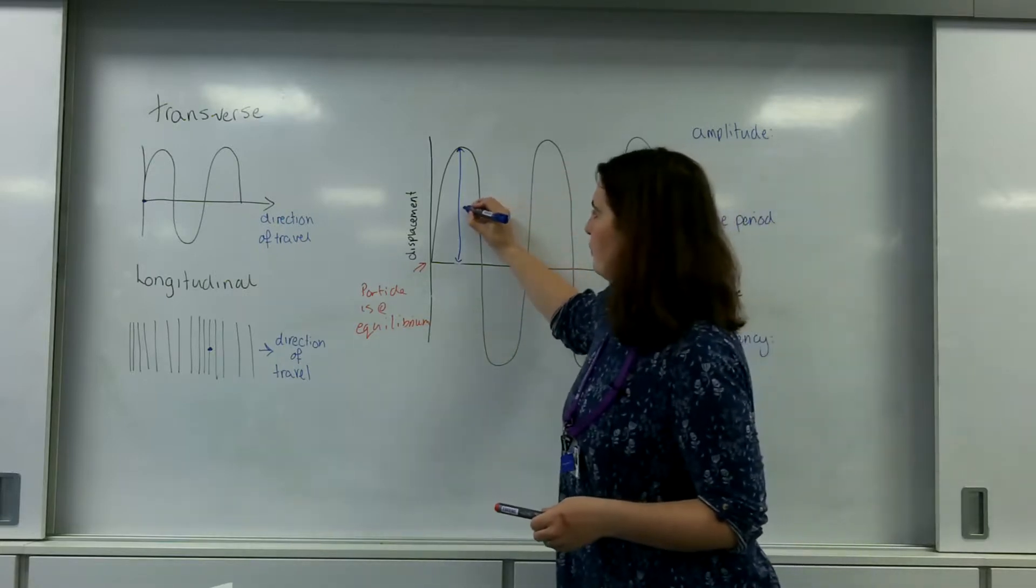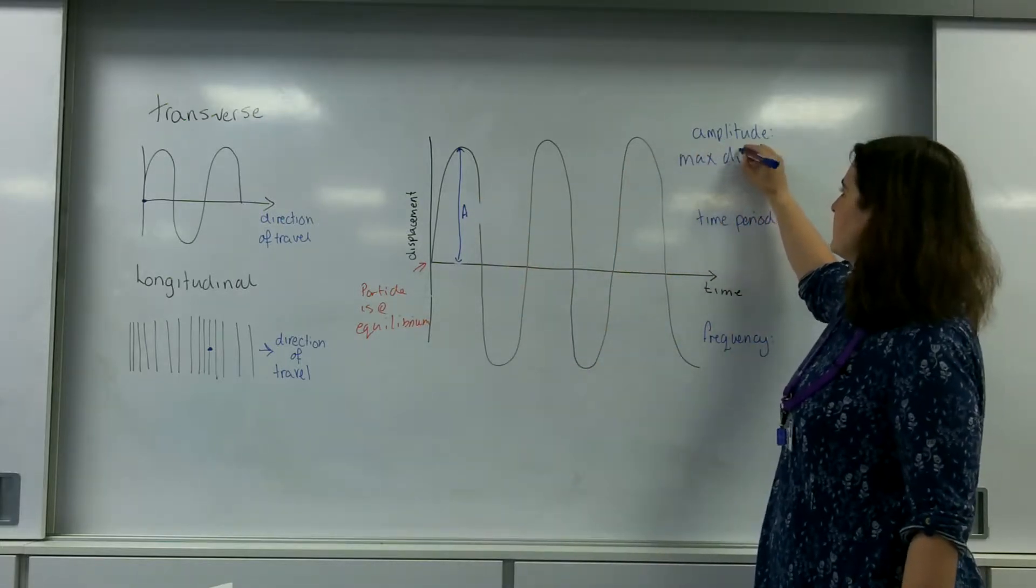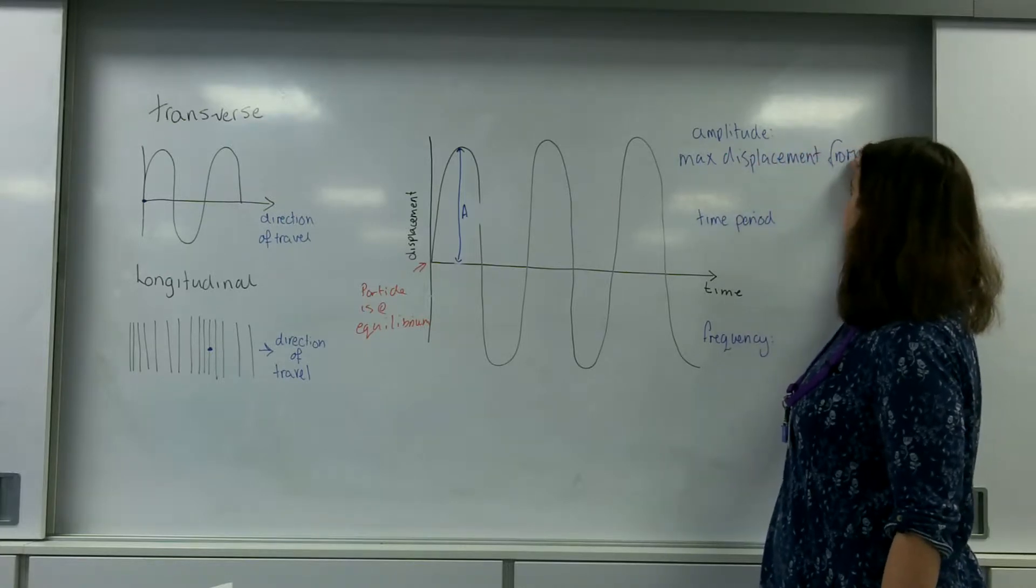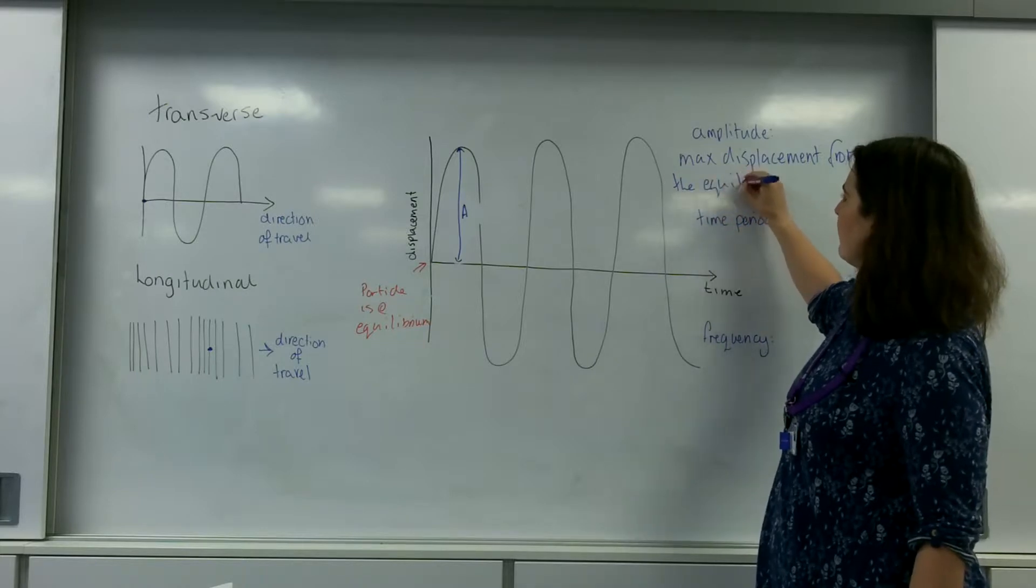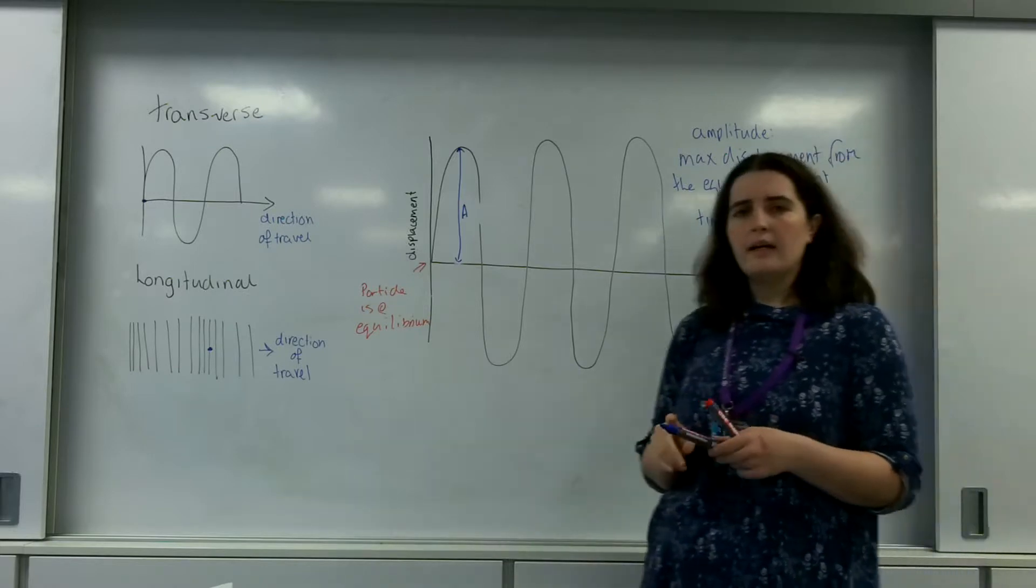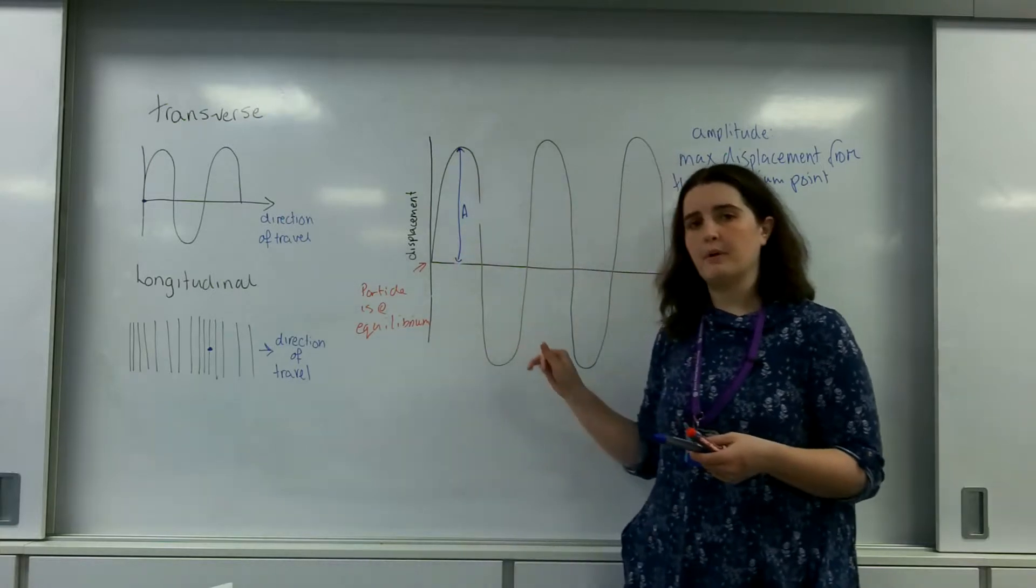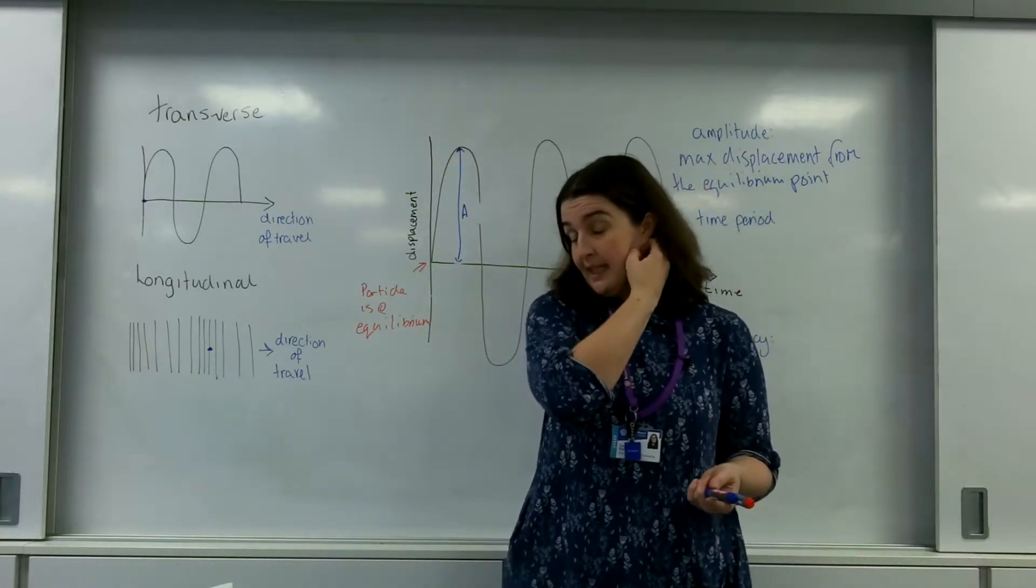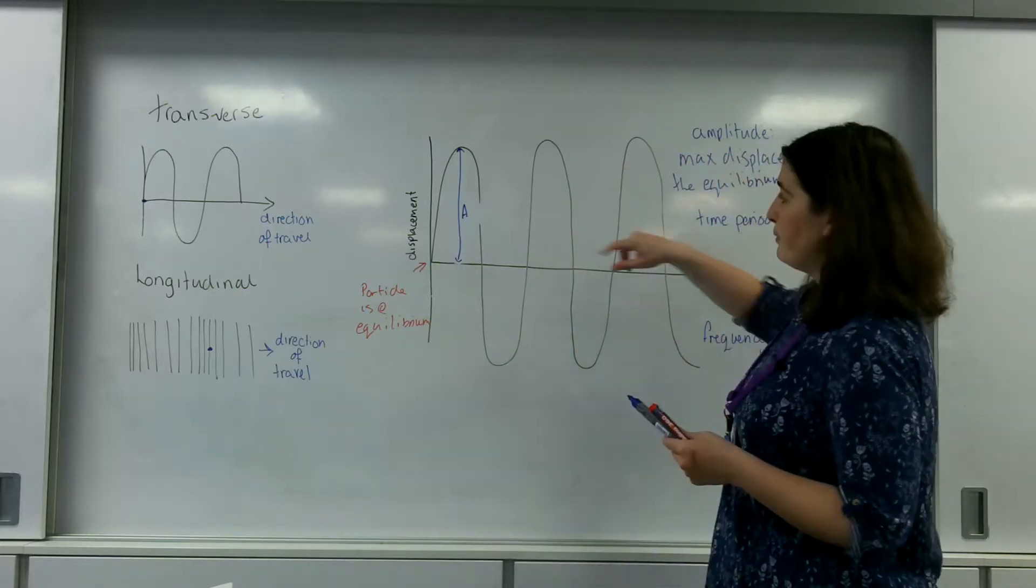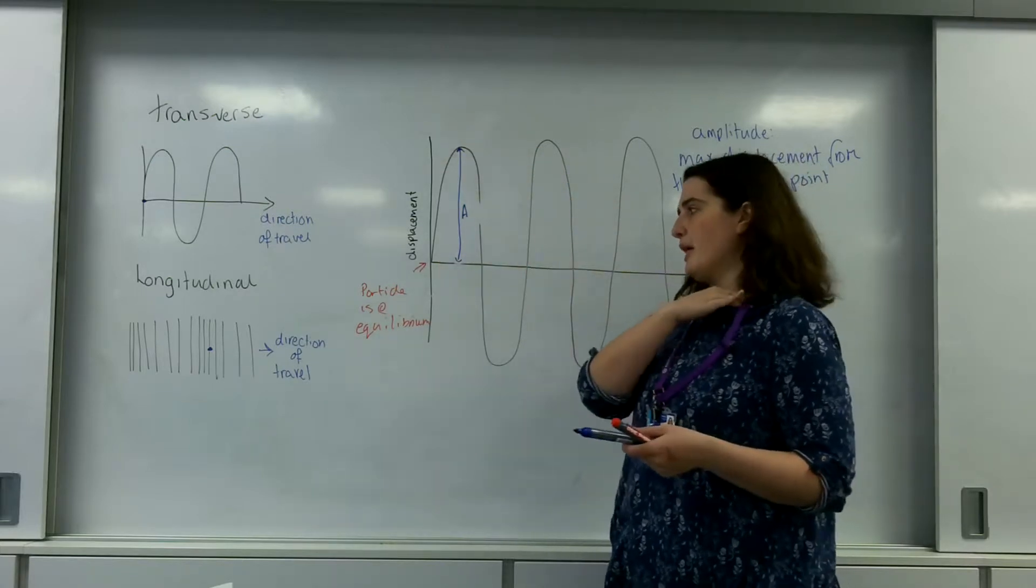And what that means is basically that's where the particle was before the wave even turned up. Now the amplitude or A is defined as the maximum displacement from the equilibrium point. The reason I'm using the word displacement is of course the amplitude could be a positive number or a negative number. So using displacement, which is a vector, implies that I can talk about positive and negative. So the amplitude is basically the maximum displacement an object would go from the equilibrium point.